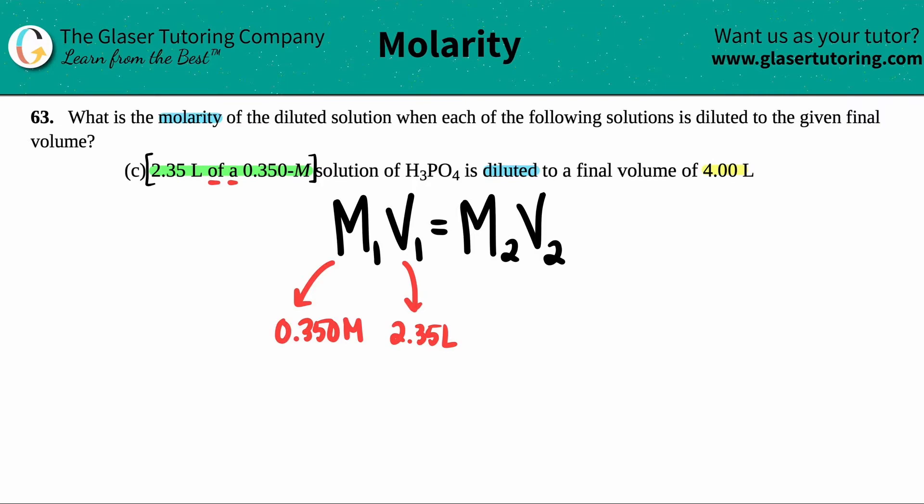Now, let's see. Let's find out the other molarity and the volume. Well, they say it was diluted to a final volume of 4 liters. So we know that this volume has to be 4.0 liters, 4.00.